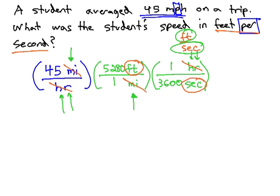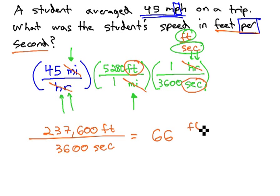We finally have the units we want. We're ready to multiply out this problem. Multiplying across the numerator, we have 45 times 5,280 feet times 1, giving us 237,600 feet in the numerator, and 1 times 3,600 seconds, being 3,600 seconds in the denominator. Finally, we divide by the 3,600 to get 66 feet per second, or feet over second, for our final answer.